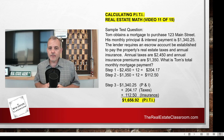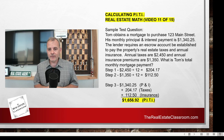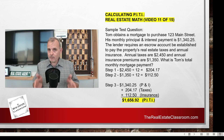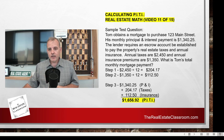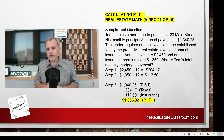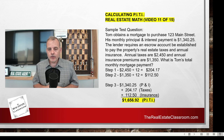Step three, the final step: we take the principal and interest payment of $1,340.25, add our monthly tax of $204.17, and our monthly insurance of $112.50, and add them all together. That gives us a total monthly mortgage payment — our monthly PITI — of $1,656.92. Remember, the taxes of $204.17 and insurance of $112.50 go into the escrow account, where every month it builds up until taxes and insurance are due. This is one type of PITI calculation you might see on your real estate licensing exam.